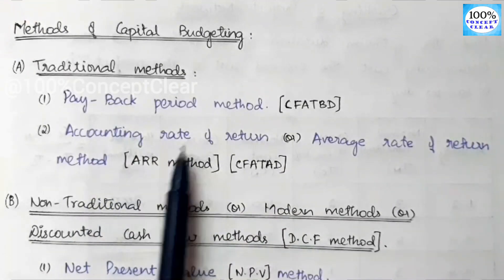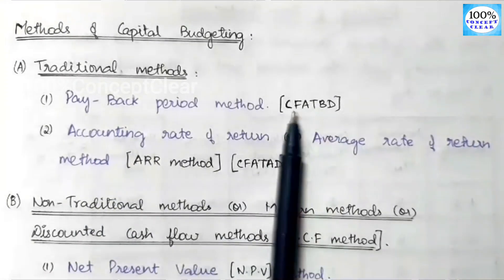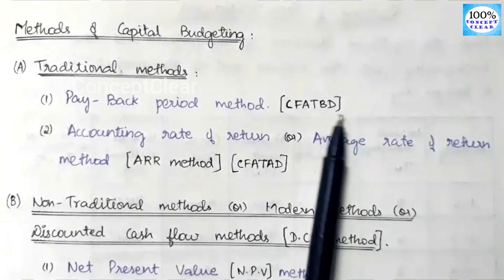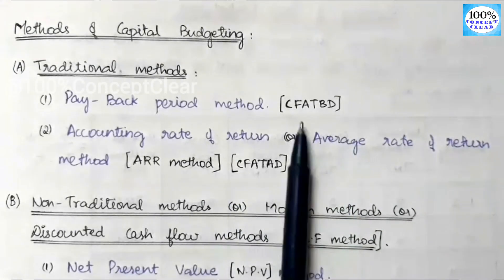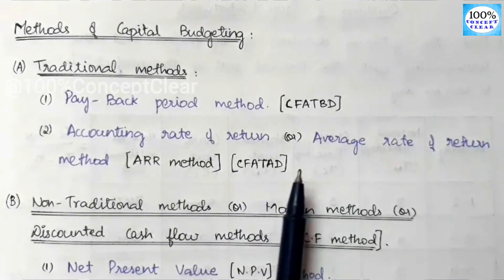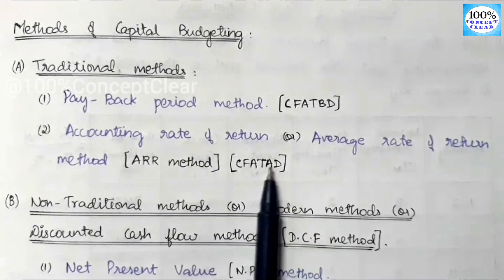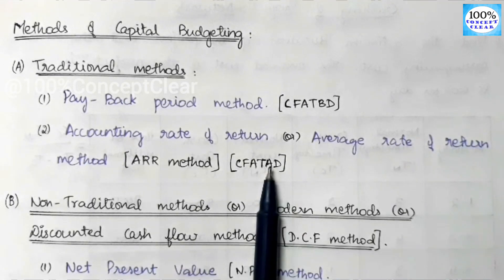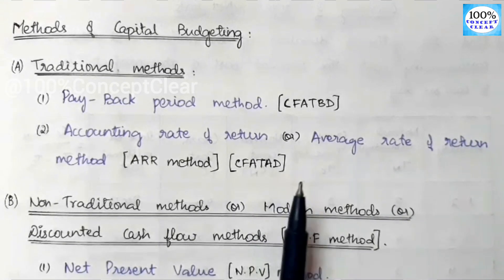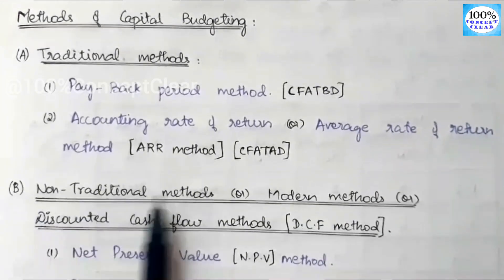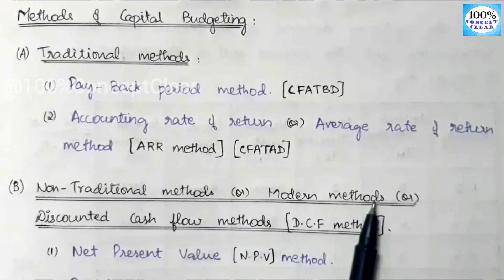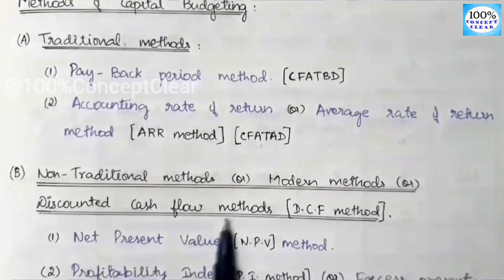We will cover the video already — cash flow after tax before depreciation, and cash flow after tax and after depreciation. For all these cash flow values, we will make each video and cover the playlist in the description box. So in this video, we are looking at the next method: the non-traditional method, or modern method, or discounted cash flow method.